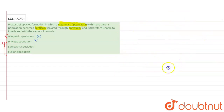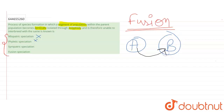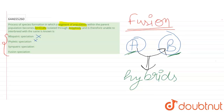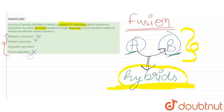Looking at the next form — fusion speciation: here, two populations of the same species, population A and population B, show a very positive form of interbreeding, and due to interbreeding they lead to the formation of certain hybrids that are a combination of population A and population B. These hybrids then take over, creating a population of hybrids. Since the two populations as a whole are getting converted into hybrids, and not a segment of the population, this is also not the correct answer.